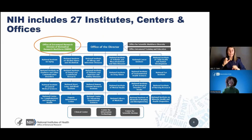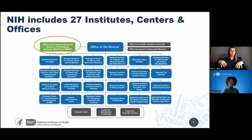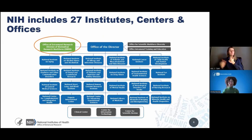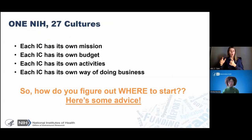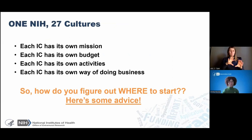As you can see here, there are 27 different institute centers and offices at NIH. The Division of Biomedical Research Workforce is located within the Office of Extramural Research under the Office of the Director. There is one NIH, but each IC has its own mission, its own budget, its own activities, its own way of doing things. So how does everyone make sense of all these things?